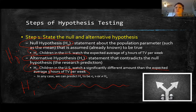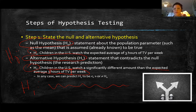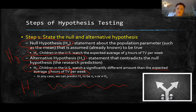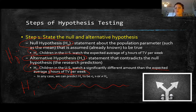Think of the null as 'not' — H0, zero meaning nothing. Nothing's changing, nothing's different, nothing is going on here. H1 means something is happening — there is change, there is a difference, something's going on. Think of it dichotomously: zero means nothing, one means something. That's how you can think of the null and alternative hypotheses.